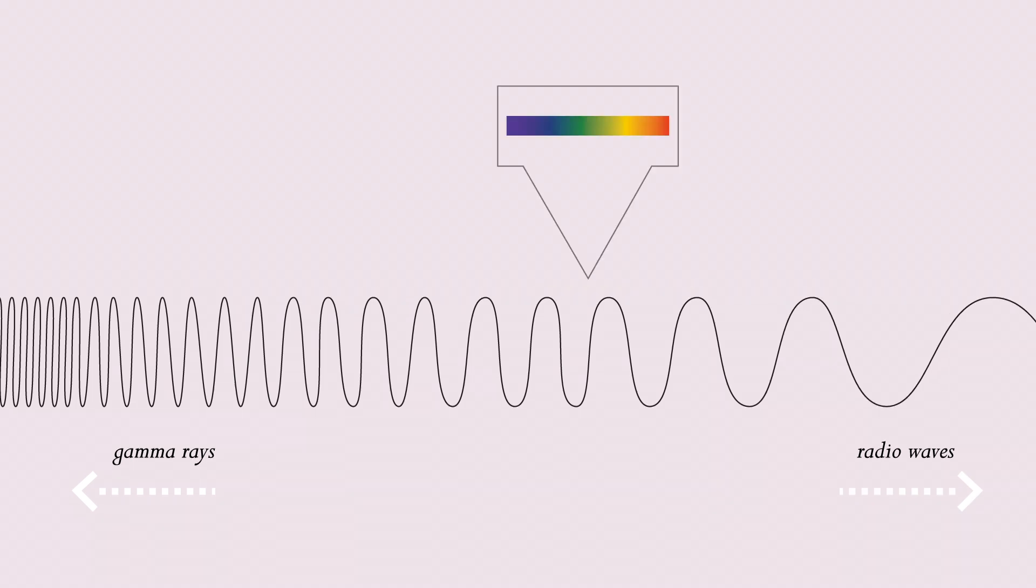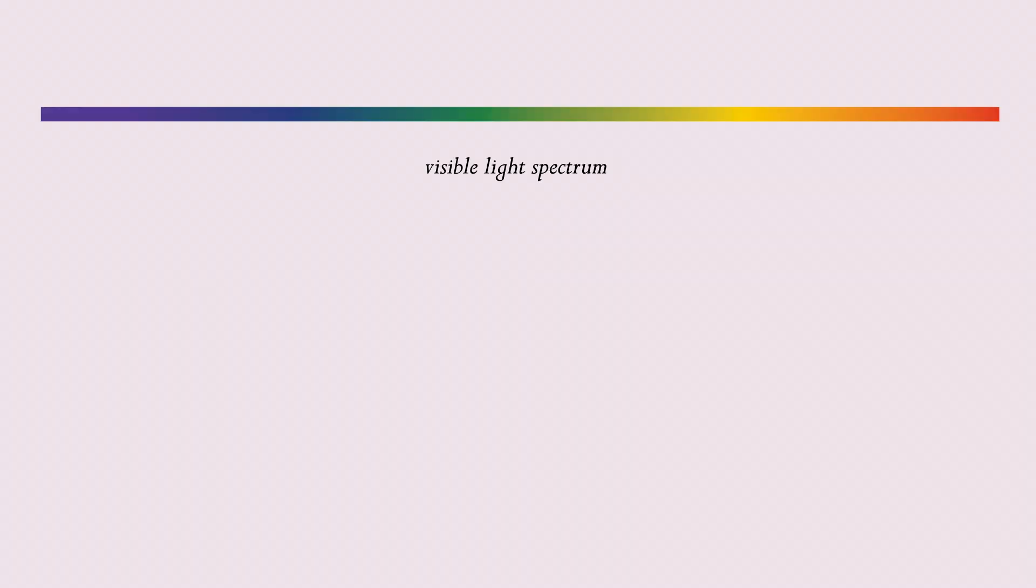The light we are able to see, called the visible light spectrum, ranges from violet light, which has a wavelength of about 400 nanometers, to red light, which has a longer wavelength of about 650 to 700 nanometers. But how do we perceive the visible light spectrum?